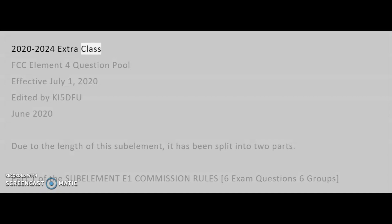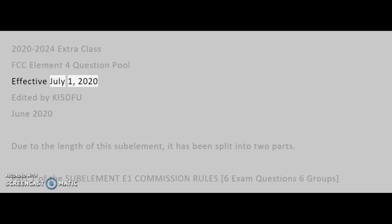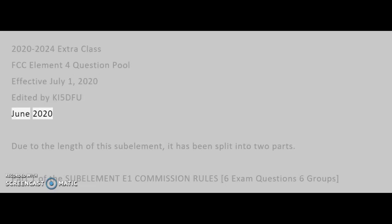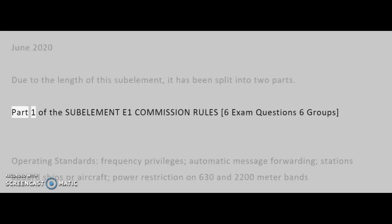2020–2024 Extra Class FCC Element 4 Question Pool, effective July 1, 2020. Edited by KI5DFU, June 2020. Due to the length of this sub-element, it has been split into two parts. Part 1 of sub-element E1: Commission Rules, 6 exam questions, 6 groups.